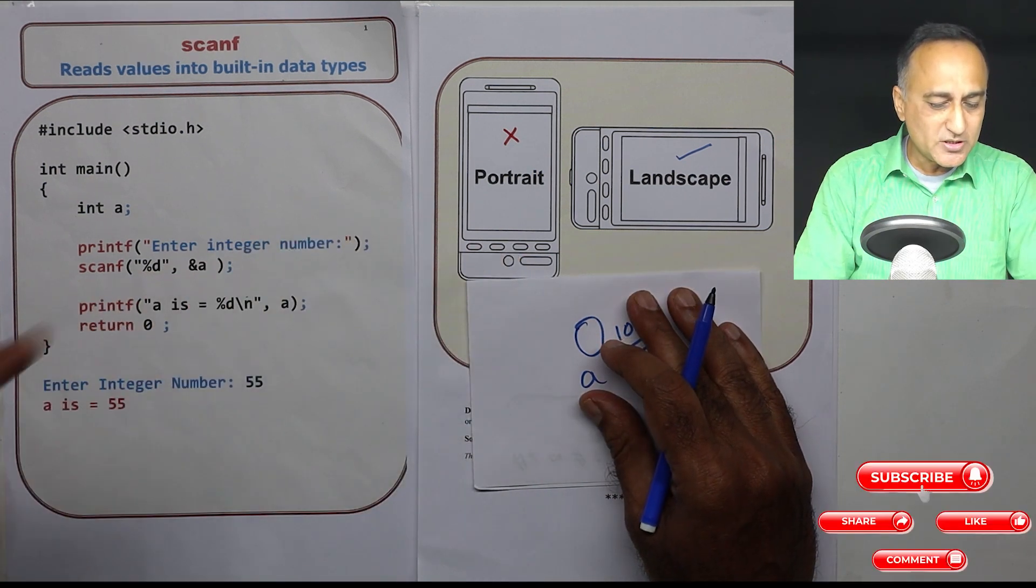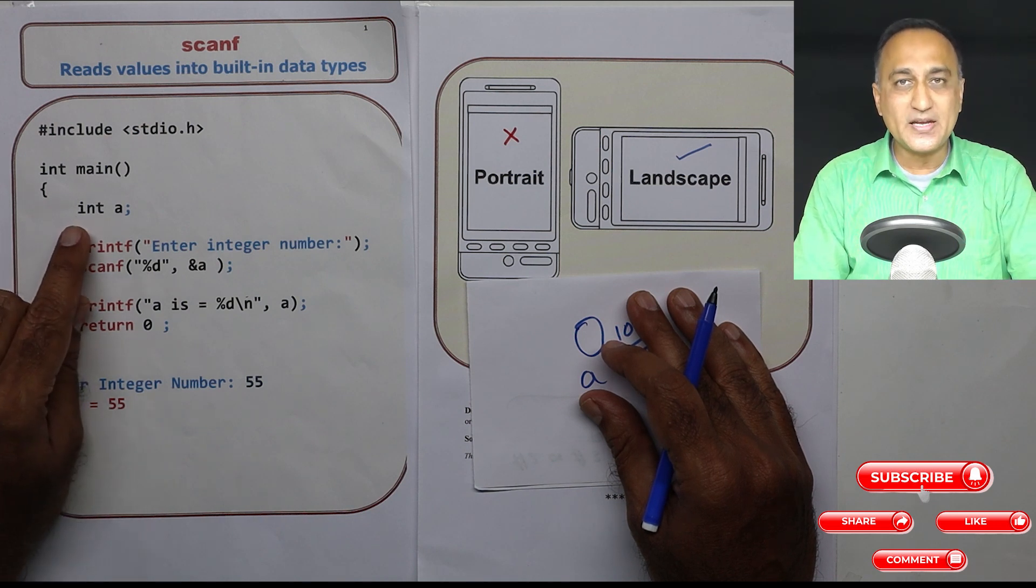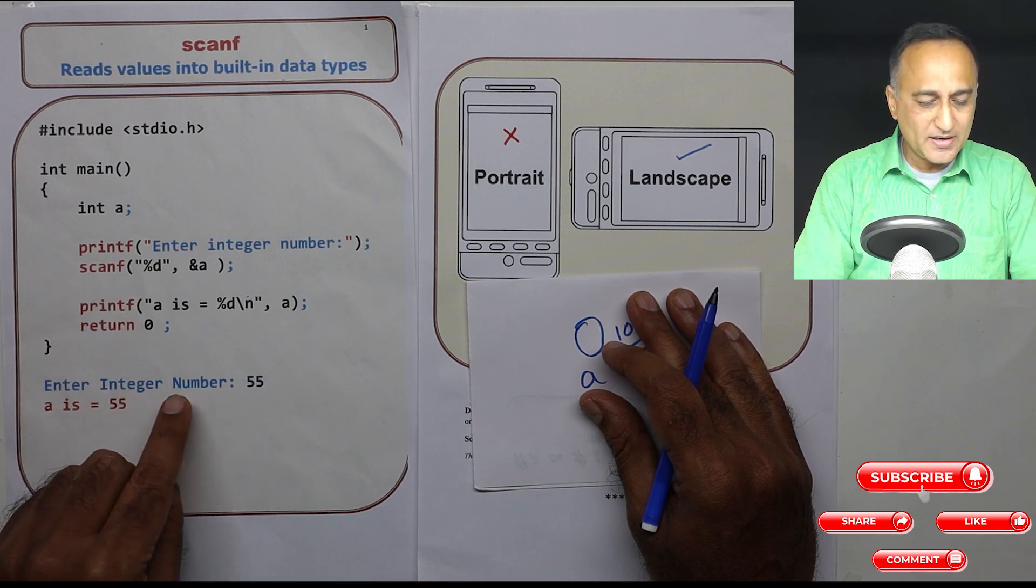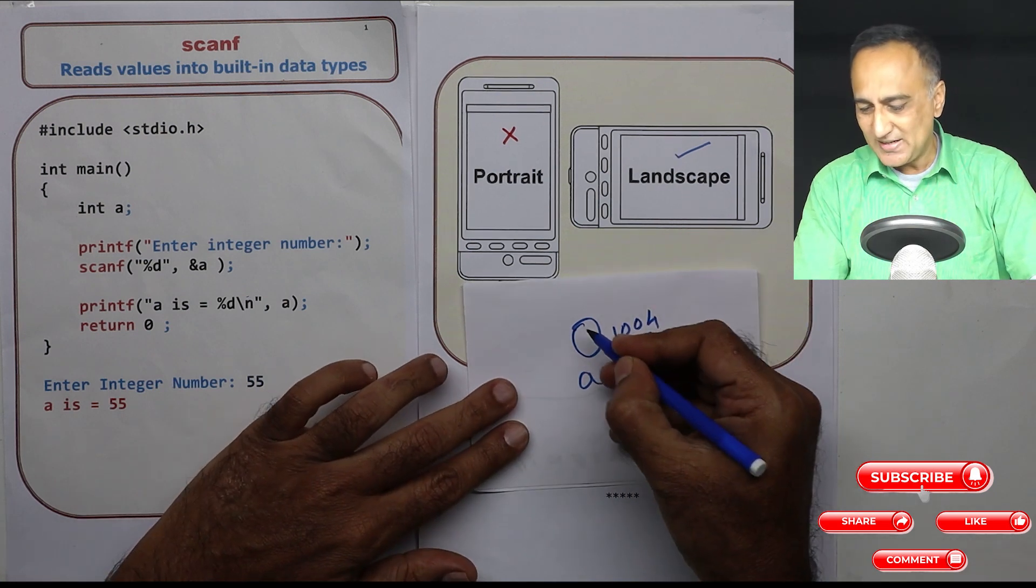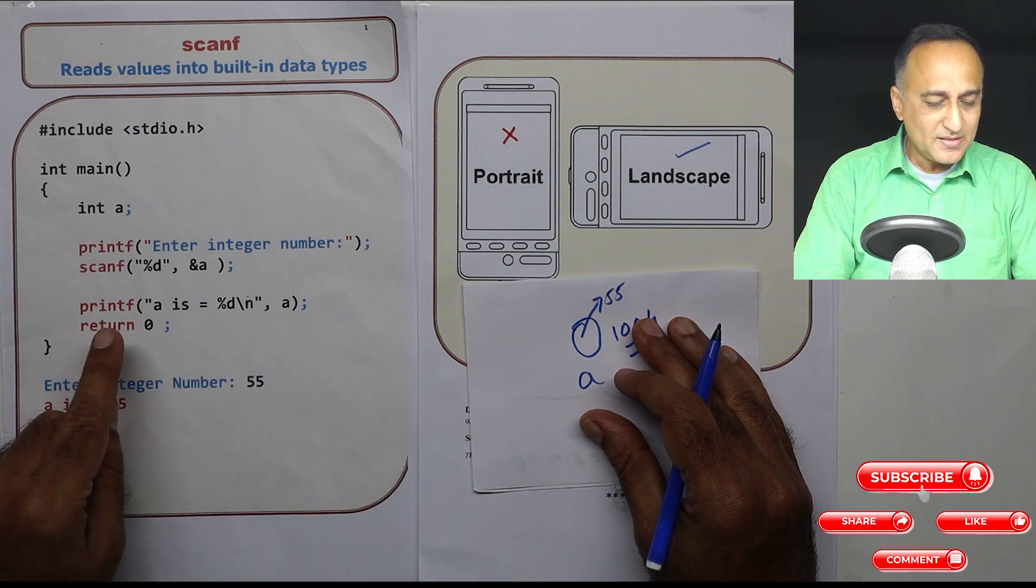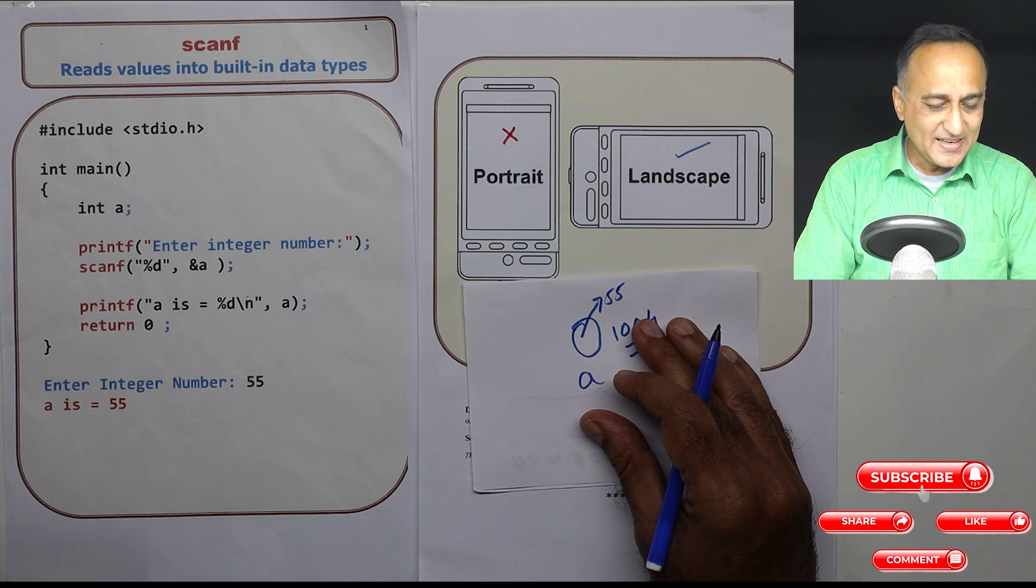I am asking the user to enter an integer number. When I say int a, it is not going to contain any fractions. He or she is entering 55. So the value contained in a is 55. Then I am saying print a is equal to %d, a. I am printing a is 55.